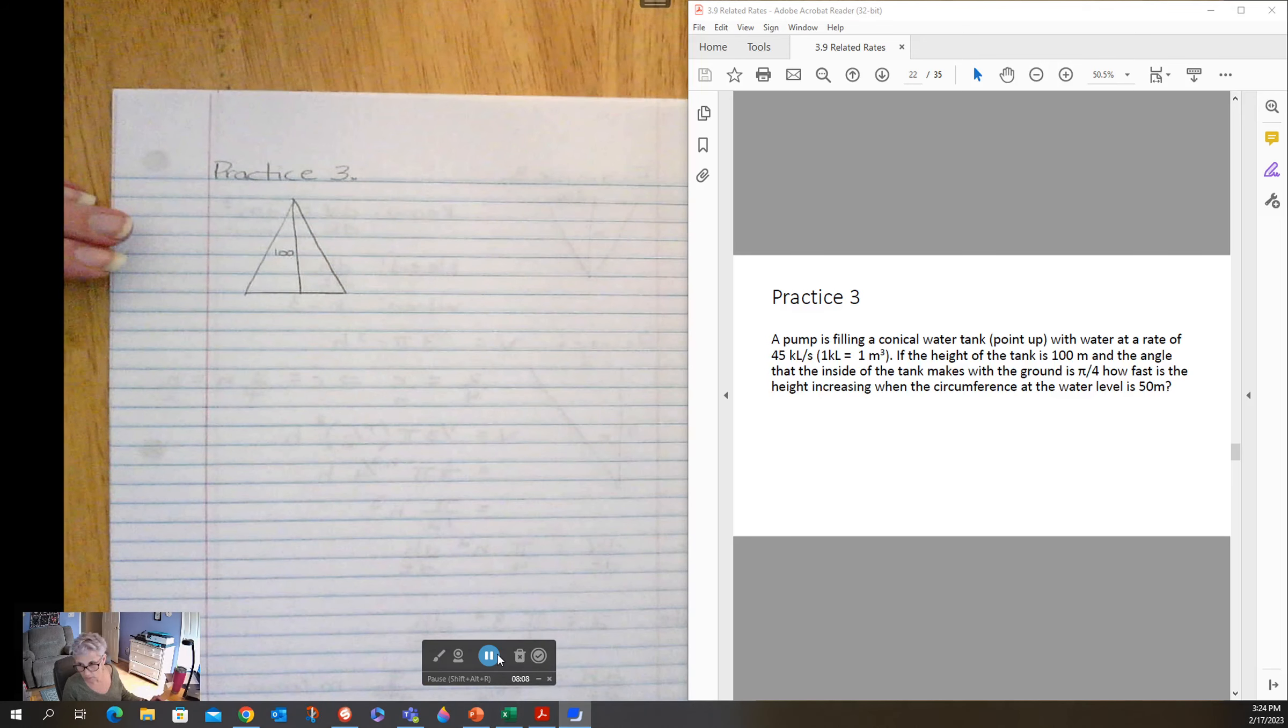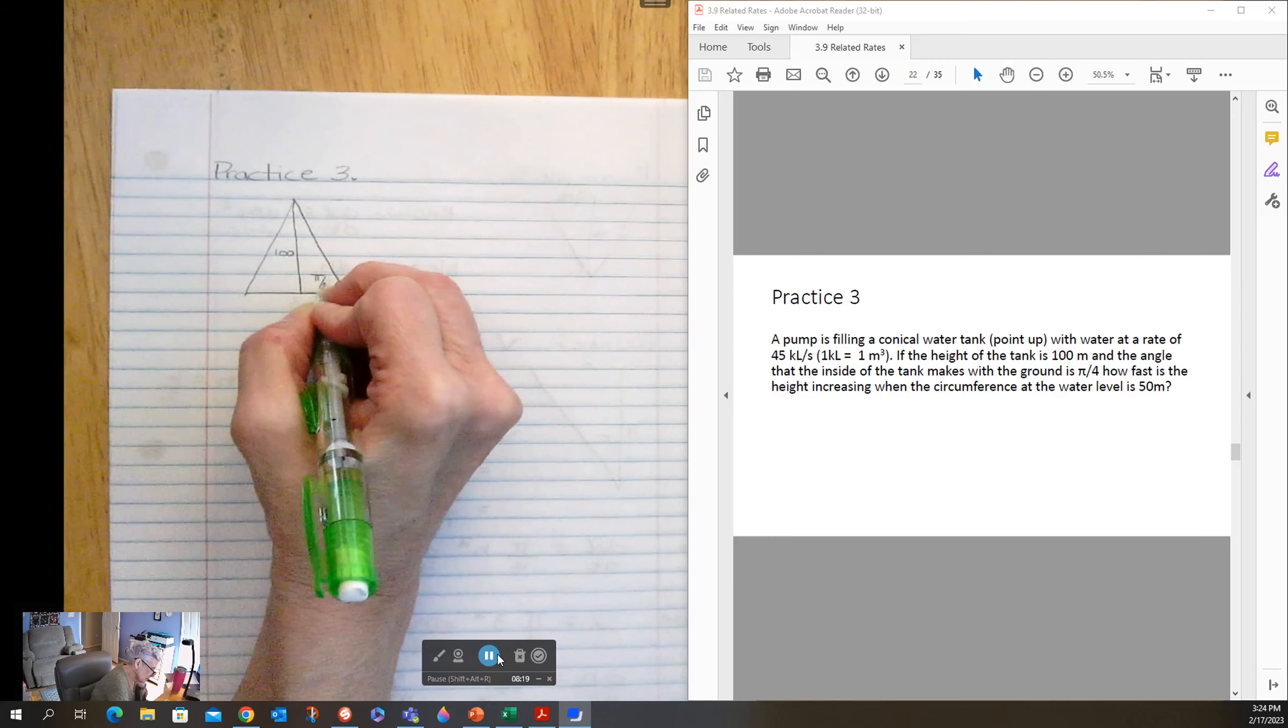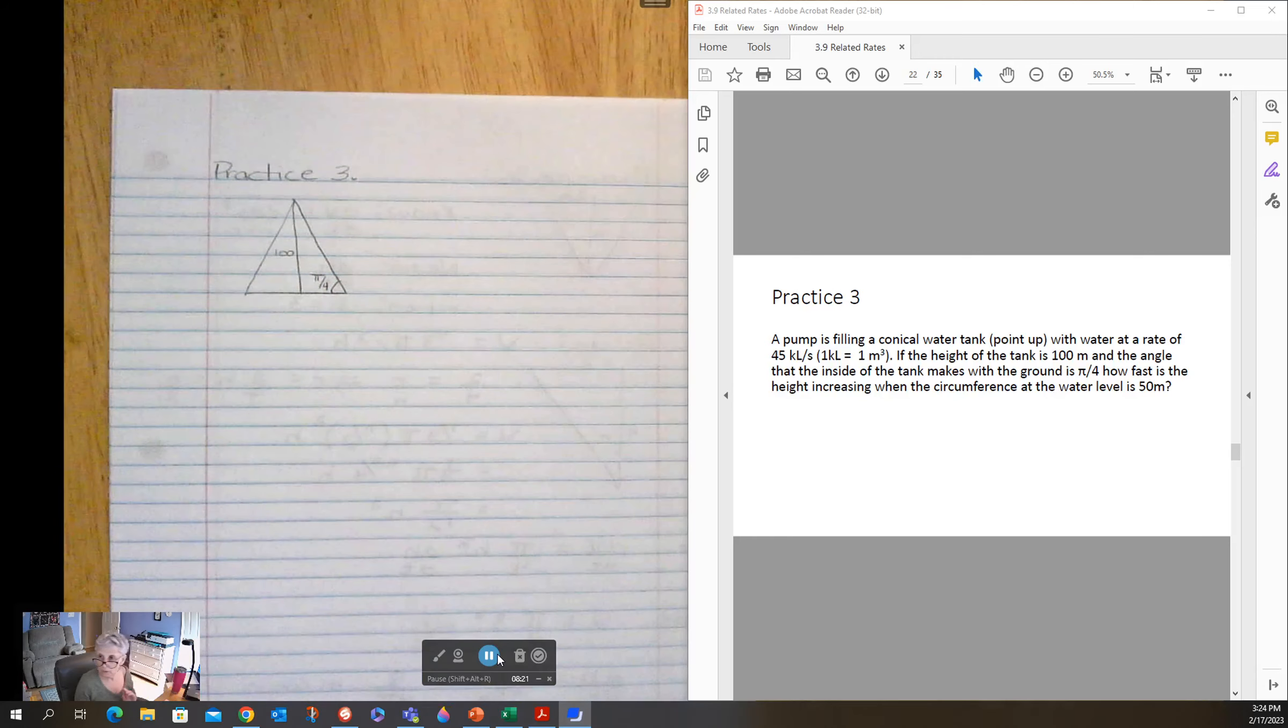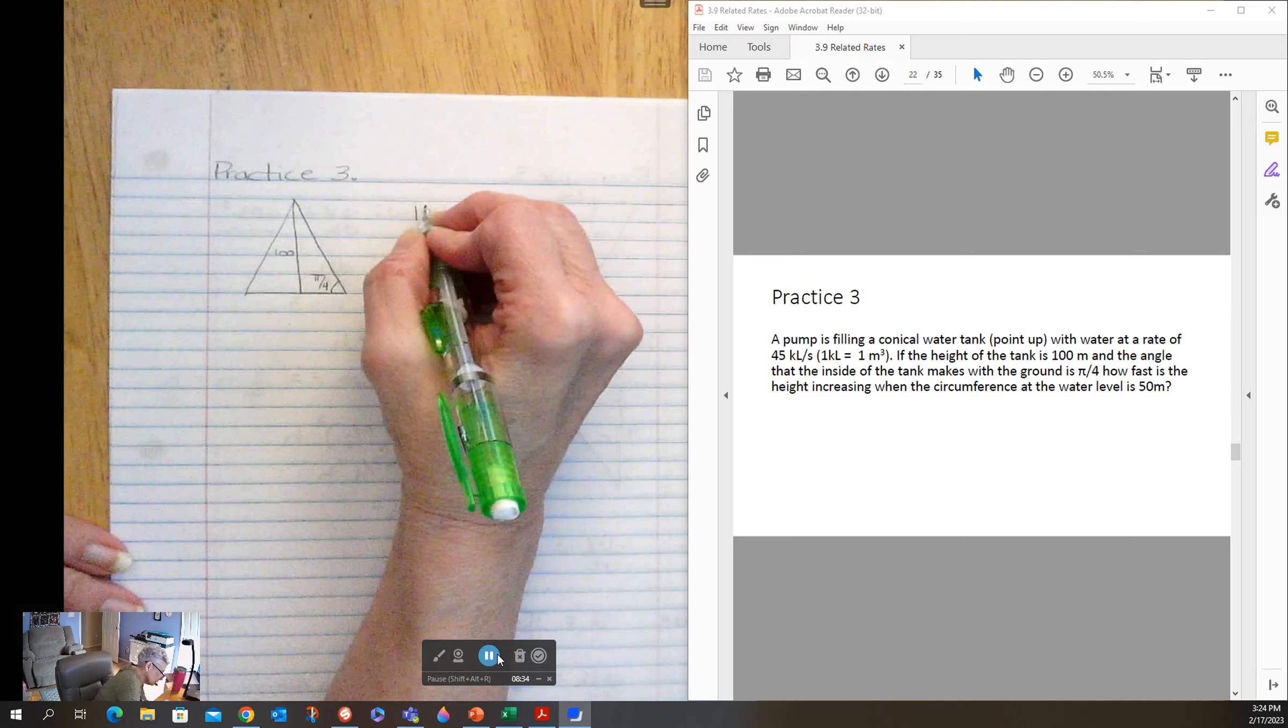We don't know the base, but we know that the angle that it makes with the ground is pi over four. So this is pi over four. So I need to come up with a relationship between height and radius at some point, but we're going to deal with no need and win first.